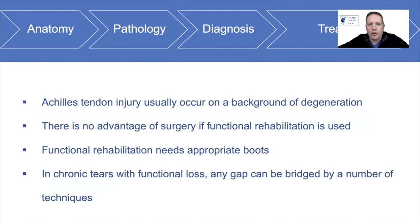To finish, Achilles tendon ruptures usually occur on a background of degeneration. There is no advantage of surgery if functional rehabilitation is used. Rehabilitation, however, needs to be appropriate — you need the appropriate protocol to expect the same outcomes as the reported literature. And in chronic tears with functional loss, any gap can be bridged by a number of different techniques. Thanks.